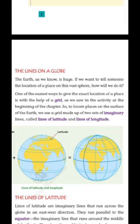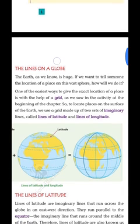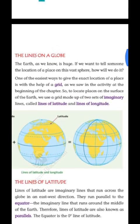अगर हम किसी particular place को globe में प्रदर्शित करते हैं और globe की मदद से जानना चाहते हैं कि प्रत्येक परिस्थिति कहाँ पर है, तो grid system की मदद से हम जानते हैं। One of the easiest ways to give the exact location of a place is with the help of a grid.